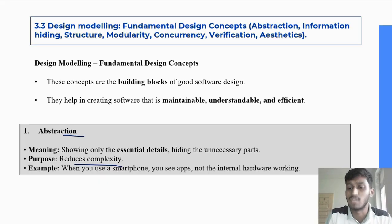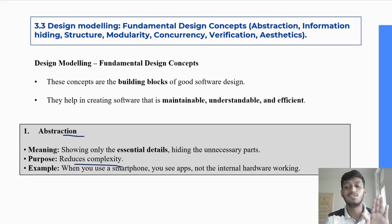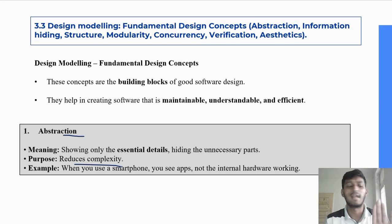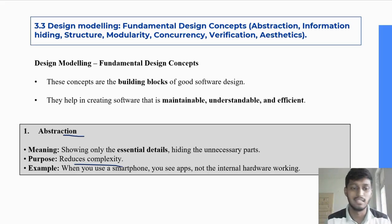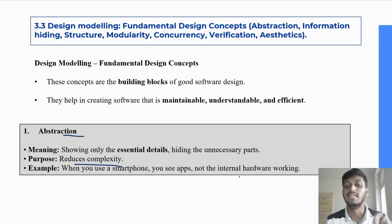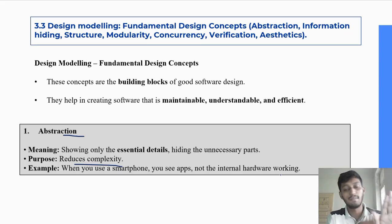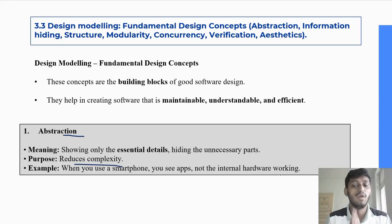Abstraction means the user won't find it complex; the application's user interface will look simple, but what is happening behind that user interface will be hidden. The user doesn't need to know what is happening behind the scenes. For example, when you use a smartphone, you see apps and the user interface, not the internal hardware workings. This is the example of abstraction.